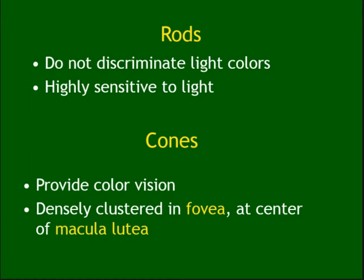Photoreceptors are important — you have to remember rods and cones. Rods are for night vision. Cones are for day vision and color — remember 'C goes with C: cones, color.' Cones are found throughout the retina but are most concentrated in the fovea, which is at the center of the macula lutea.